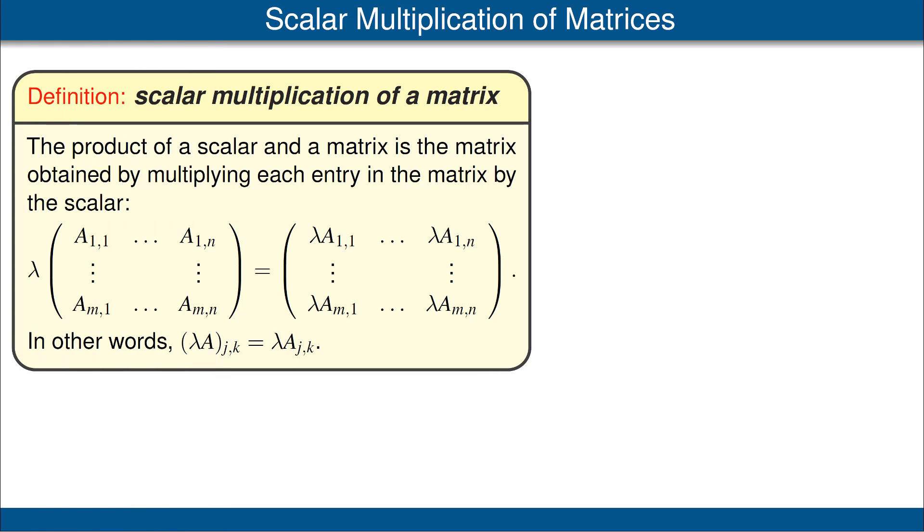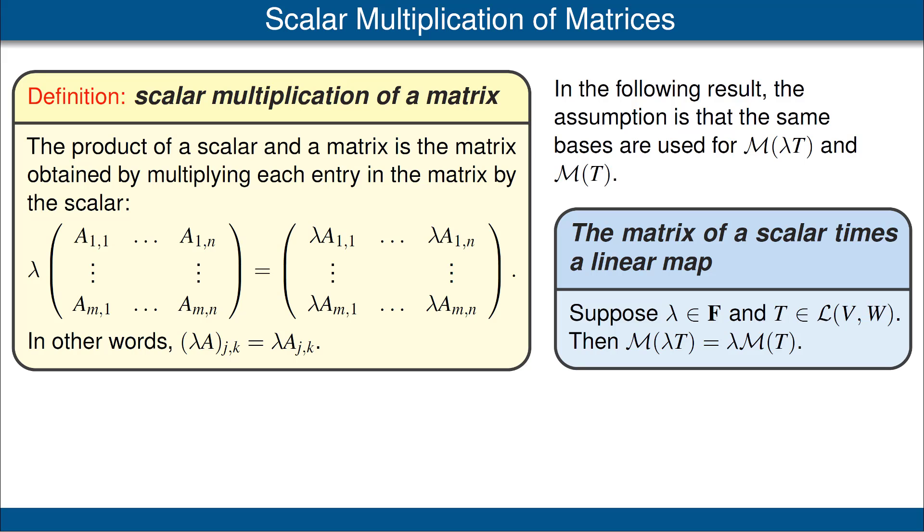We now turn to the question about scalar multiplication. Is the matrix of a scalar times a linear map equal to the scalar times the matrix of the linear map? Again, this question does not yet make any sense because we have not yet defined how to multiply a scalar by a matrix. So let's fix that problem. The product of a scalar and a matrix is the matrix obtained by multiplying each entry of the matrix by the scalar. In other words, it does exactly what you would expect. With that definition, everything turns out nicely and easily. Specifically, suppose T is a linear map from V to W and lambda is a scalar. Then the matrix of lambda times T equals lambda times the matrix of T. Again, for this equation to be true, we have to use the same bases throughout.